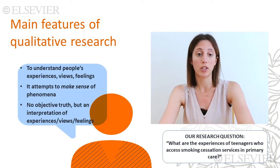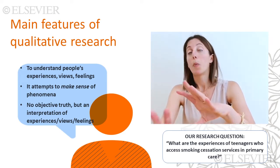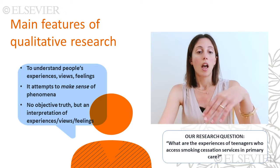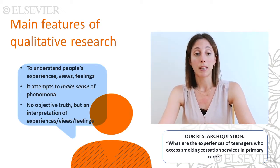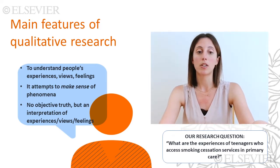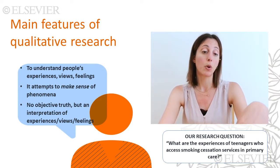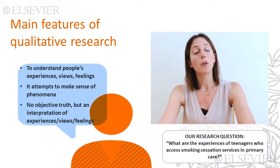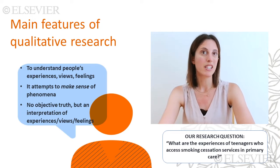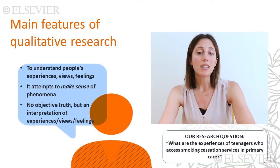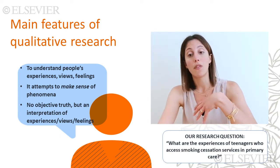For example, a more quantitative question starting from the same problem would have been: what are the predictors of teenagers' engagement with smoking cessation services? Qualitative research aims to make sense of and interpret phenomena — it does not limit itself to observing and recording them. It does not believe there is an objective truth to arrive at, but rather an interpretation of participants' experiences, views and feelings as they convey them to us.